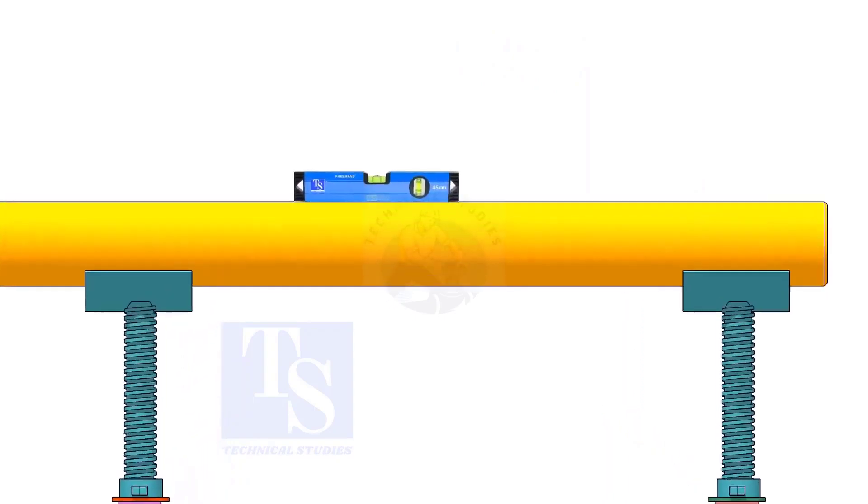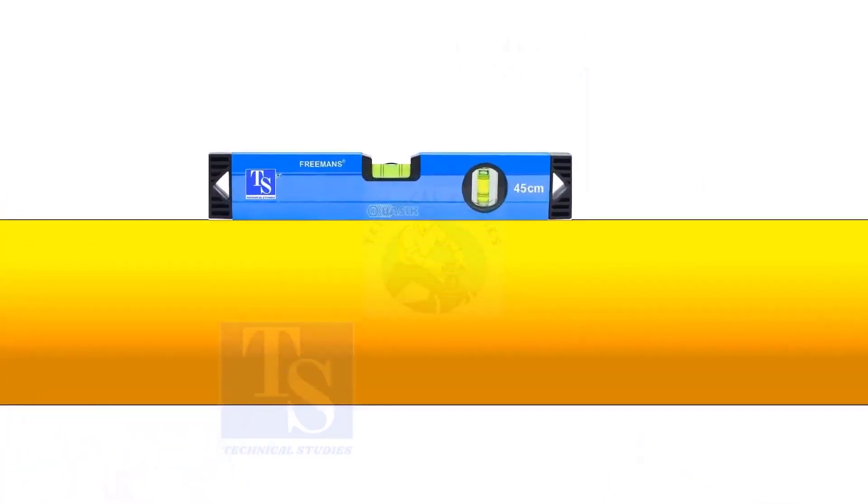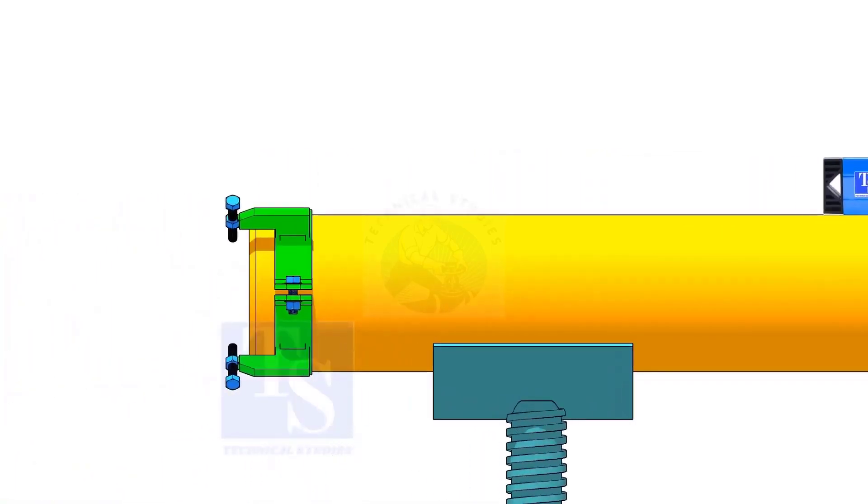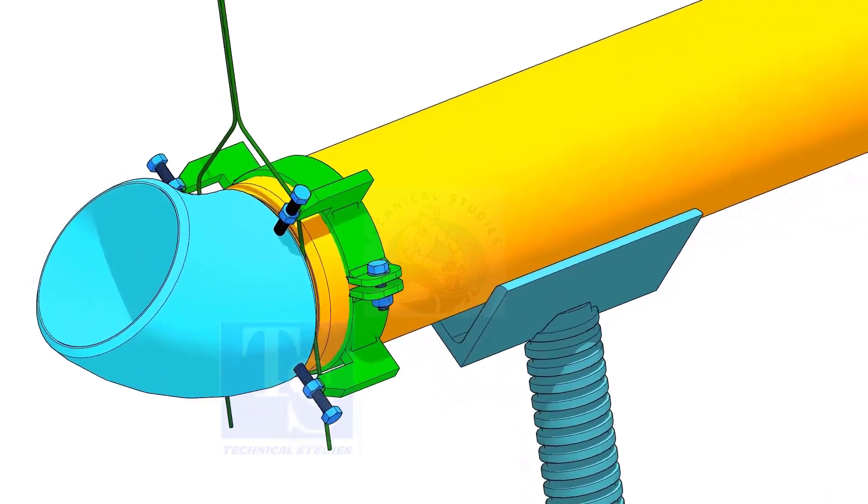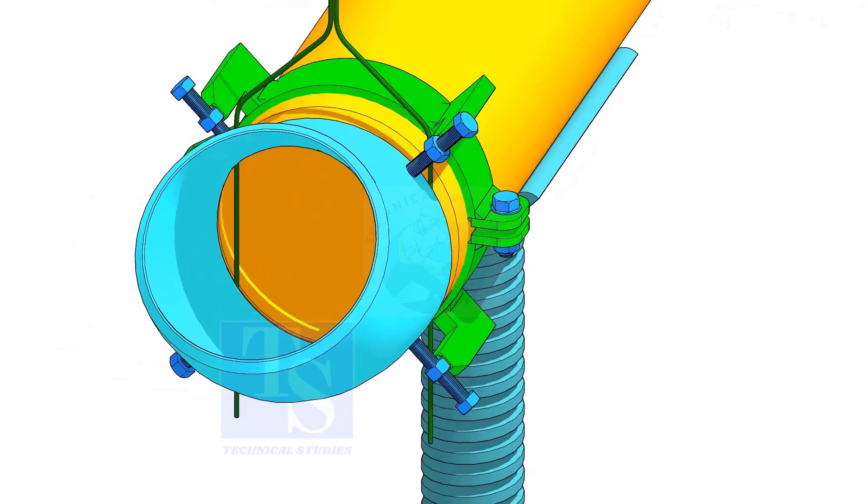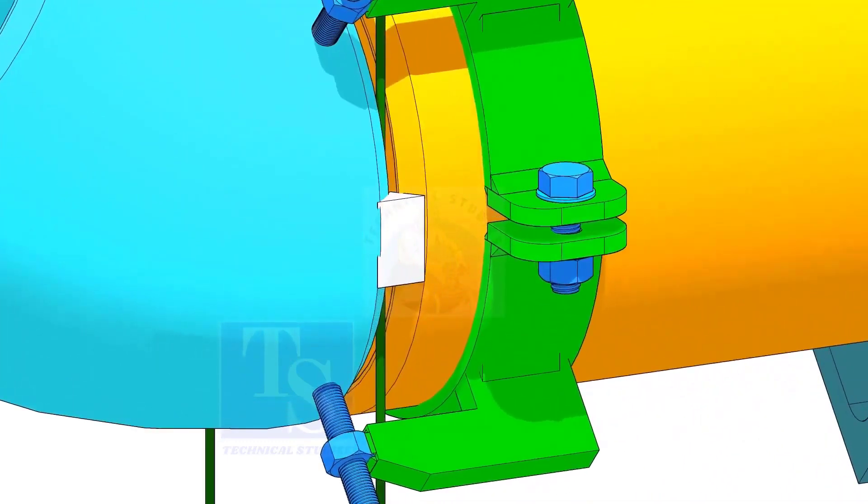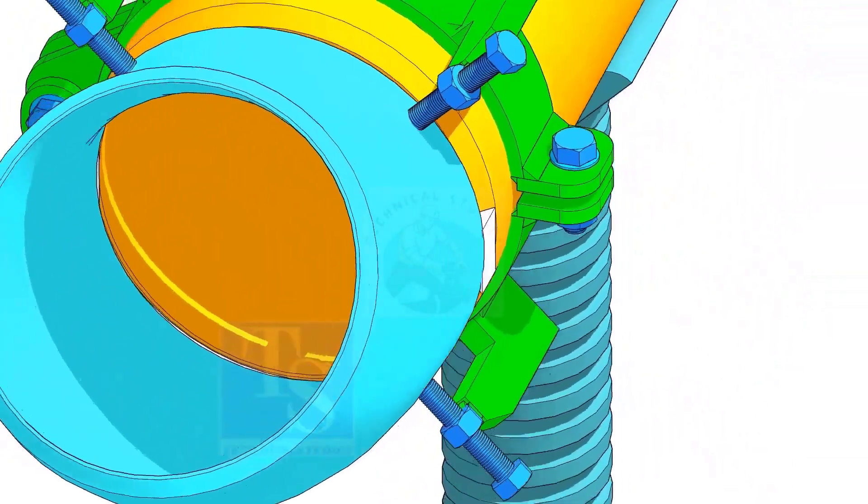This time, you need to level the pipe. After setting the gap and the overlap, tack weld on both sides of the joint.